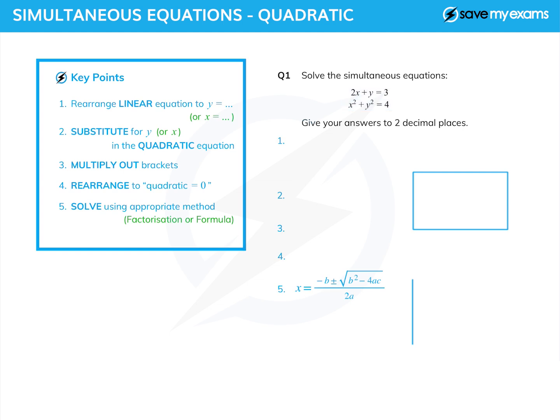How do we do this? Well, the first thing we're going to do is take the linear equation and rearrange it to y equals, or if it's easier, rearrange it to x equals. Once we've done that rearranging, we're going to substitute for either y or x in the quadratic bit of the equation.